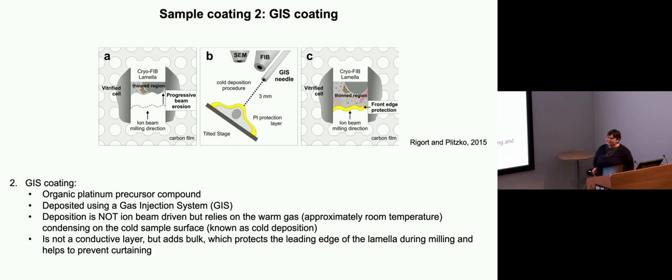By having this layer, it protects the front from breakage and it also helps protect against curtaining. These are these stripes that you see on the surface of lamellae caused by differential milling rates of different things in your sample. And again, this doesn't eliminate it, but it helps reduce it.